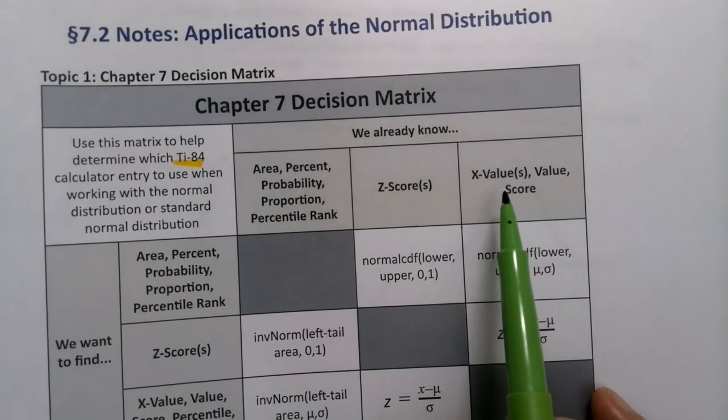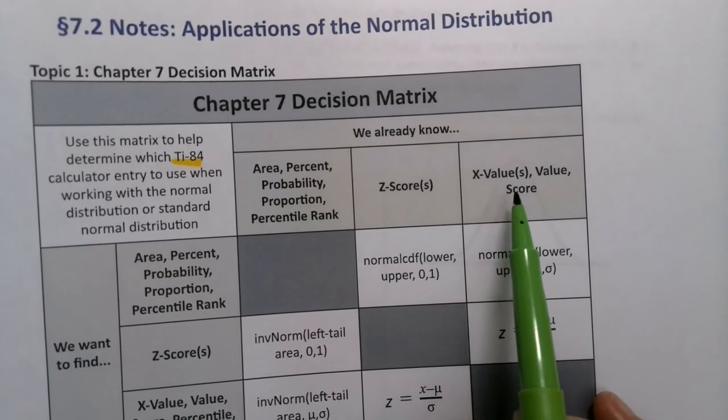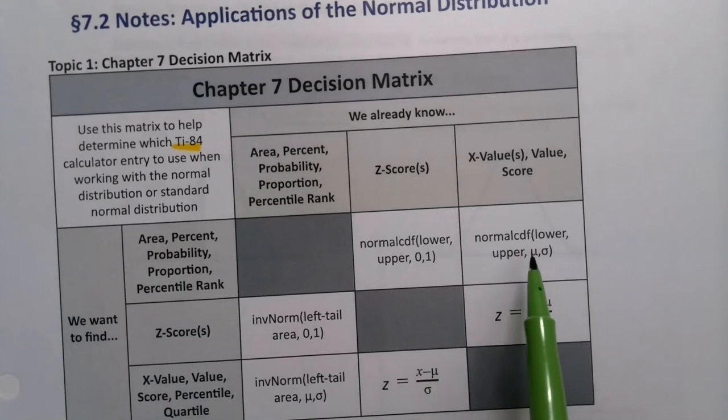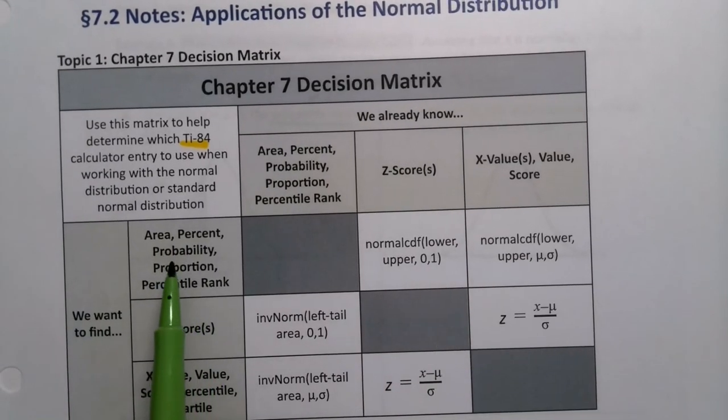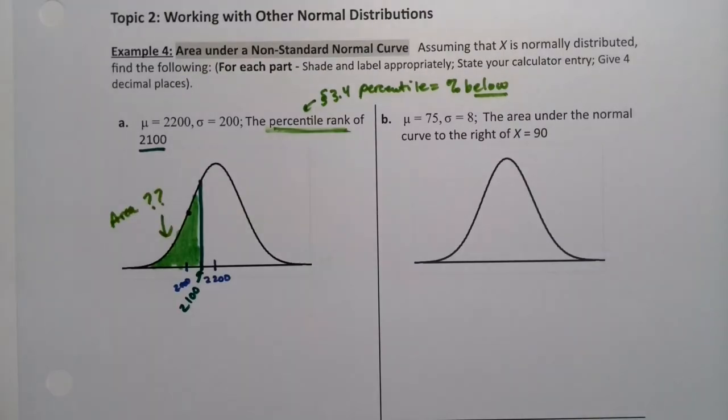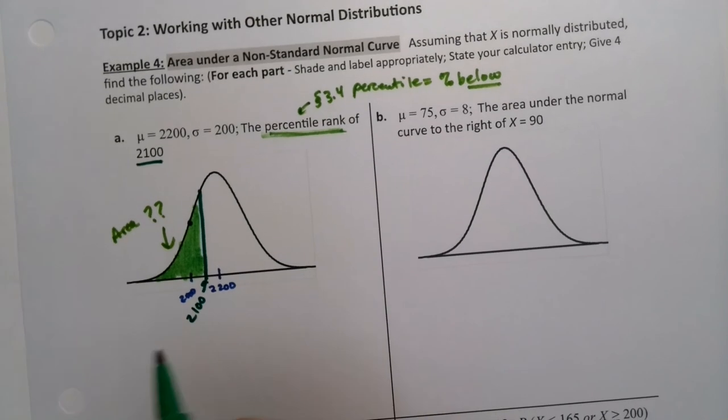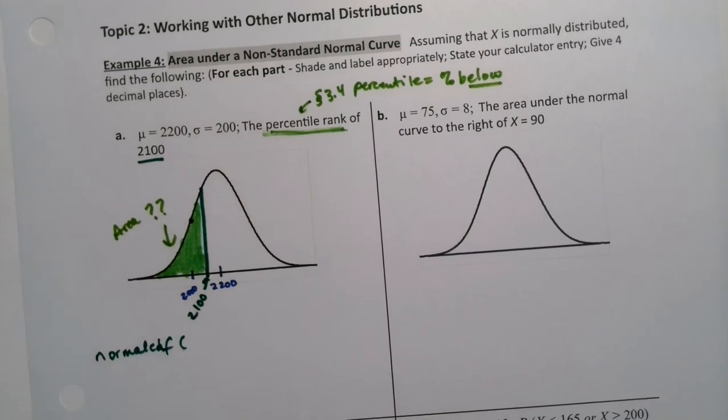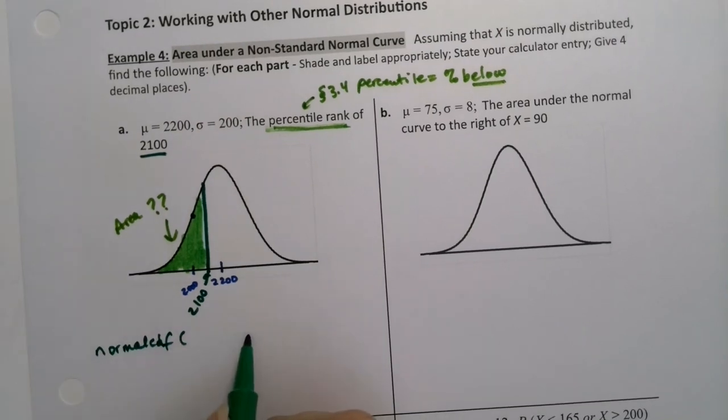I know an x value, 2100 pounds. Sorry. I gave it away. This is the giraffe problem. So 2100 pounds. And I'm looking for percentile rank, which is the proportion or percent below. So according to that decision matrix, I have to use normal CDF. And then it said lower, upper, mu, sigma.